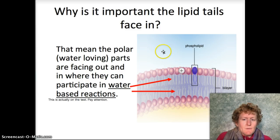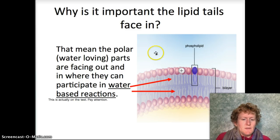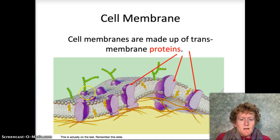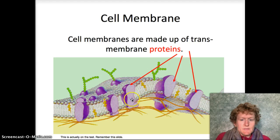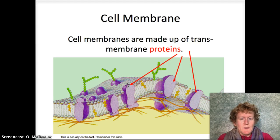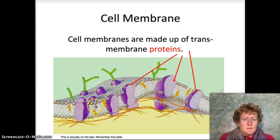The hydrophilic part of the phospholipid faces the water. In addition to phospholipids, which are gray in this picture and make up the majority of the cell membrane, the cell membrane also has transmembrane proteins. These control ions — charged particles — and also control some of the larger molecules that don't diffuse well across the phospholipids.